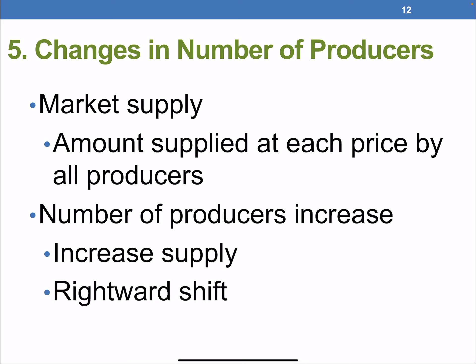The last factor is simply a change in the number of firms. Because market supply is the summation of all firms, if the number of producers increases, supply increases. We could also see the opposite: if the number of firms in the market decreases, we would see a decrease in the supply of that good.